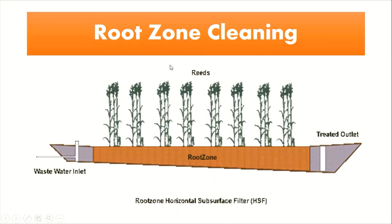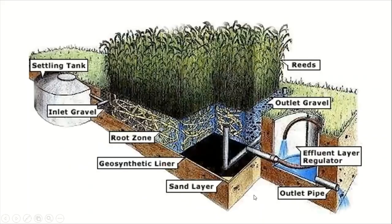The next method is root zone cleaning. In root zone cleaning, specific types of trees are used to decompose the wastewater. This is a pictorial image of root zone cleaning. In this image you can see the settling tank, inlet gravel, a root zone, and a sand layer provided at the bottom.